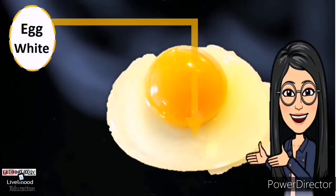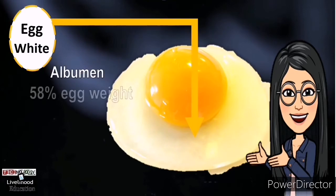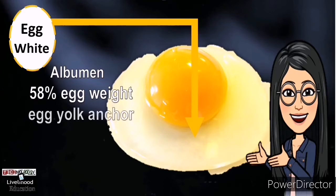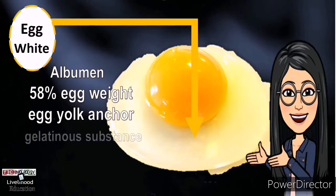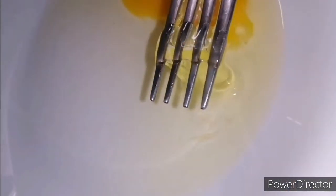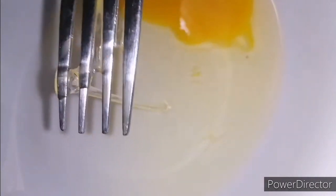Egg white — It is also called albumin. It constitutes 58% of the egg weight. It is known as the egg yolk anchor because it holds the yolk in place and at the center, and it is a gelatinous-like substance. There are two types of egg white: the thick egg white and the thin egg white.